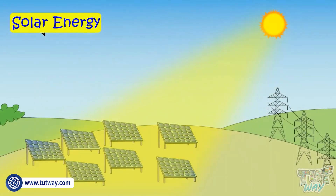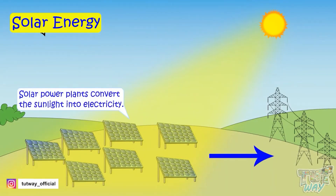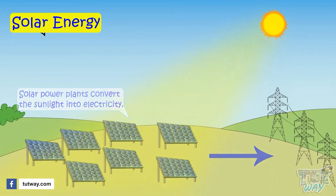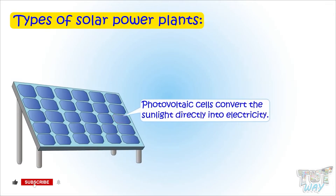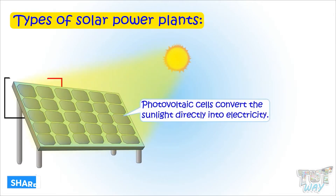Solar power plants convert the sunlight into electricity. Solar power plants are of many types. One of the types uses photovoltaic cells that convert sunlight directly into electricity.